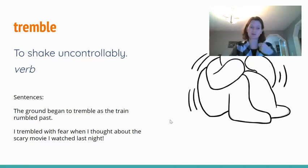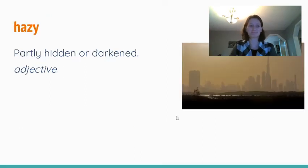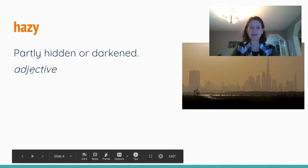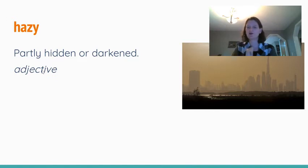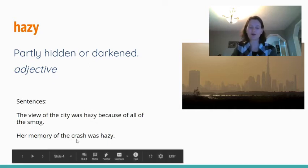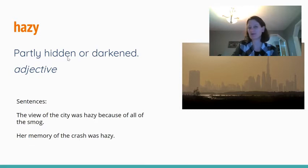Hazy means partially hidden or darkened, which you might have guessed from that first sentence about the view of the mountains being difficult when the sky is hazy. Hazy is an adjective, so it's a describing word — the sky is hazy, the clouds were hazy, the view was hazy. I've got a picture here looking across at a city that looks kind of partially hidden or darkened. The view of the city was hazy because of all the smog. It could even be a memory — her memory of the crash was hazy, partially hidden, couldn't quite remember all of it.